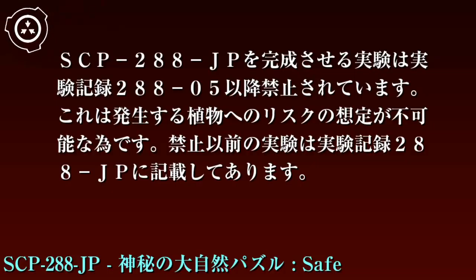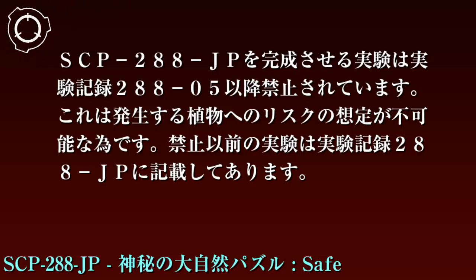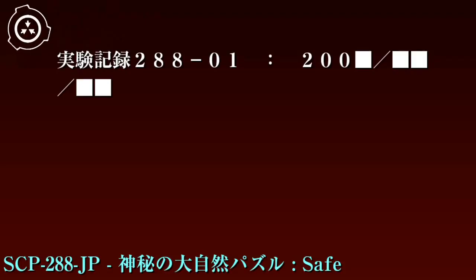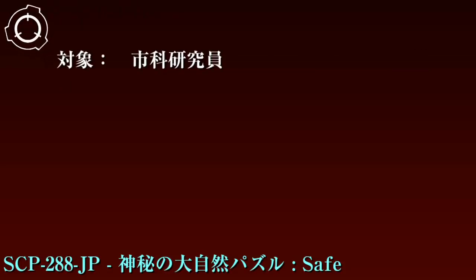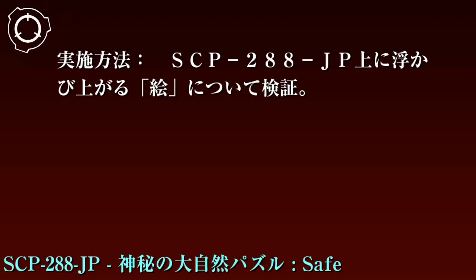出現した植物は、根が地面に対し植わっていないことが多く、時間経過とともに枯死していきます。SCP-288-JTを完成させる実験は実験記録288-05以降禁止されています。これは発生する植物へのリスクの想定が不可能なためです。禁止以前の実験は実験記録288-JTに記載してあります。